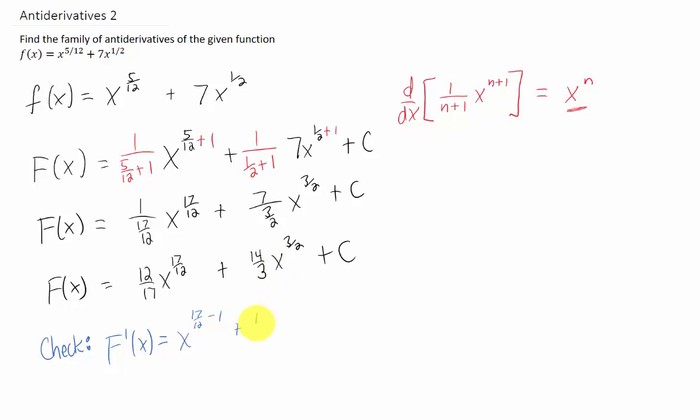When we take a derivative of the second term, we have 14 thirds times 3 halves, and that's going to be x to the 3 halves minus 1. When we take a derivative of the constant, it's just 0.